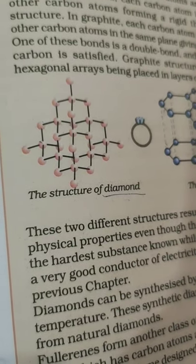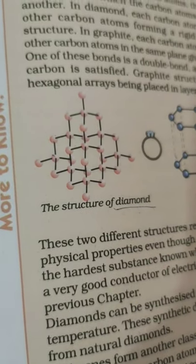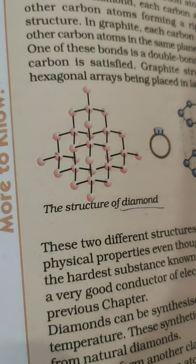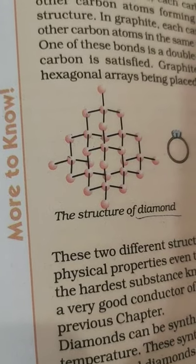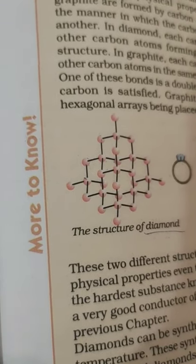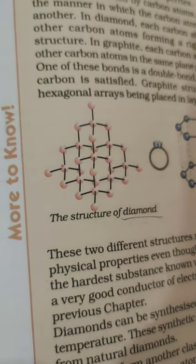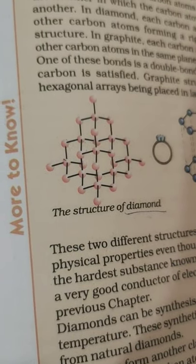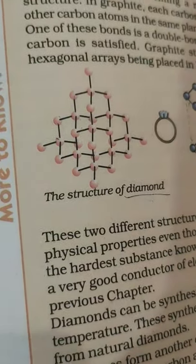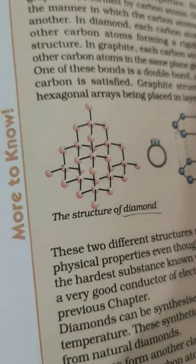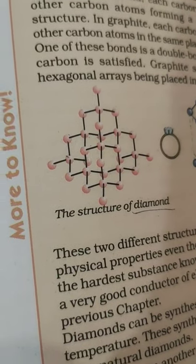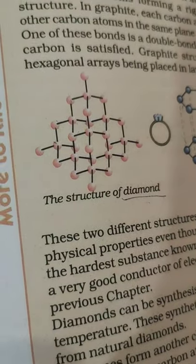Because of this tetrahedral covalent network, diamond is the hardest substance on Earth. It is used to make rock-boring drill bits, for drilling oil wells, and for glass cutters. Its melting point is very high — up to 3,500°C — because a large amount of heat is needed to break the strong covalent bond network. Diamond is a non-conductor of electricity because it has no free electrons to carry electrical current.